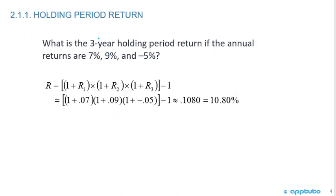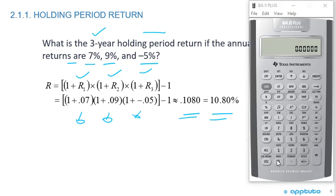Here's a quick example: what is the three-year holding period return if the annual returns are 7%, 9%, and -5%? We compound the returns: (1 + R1) times (1 + R2) times (1 + R3), so 1.07 times 1.09 times 0.95, minus one. Let's do that on the calculator: 1.07 times 1.09 times 0.95 equals, minus one, times 100 gives us 10.7985%, closest to 10.8%.